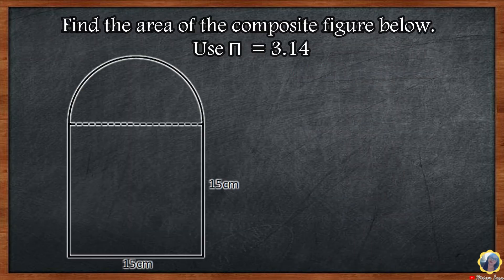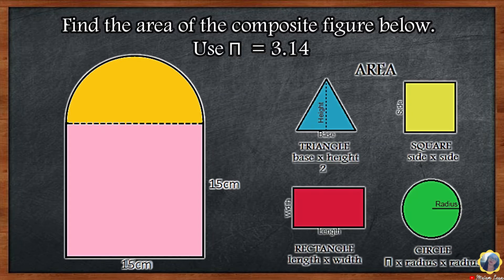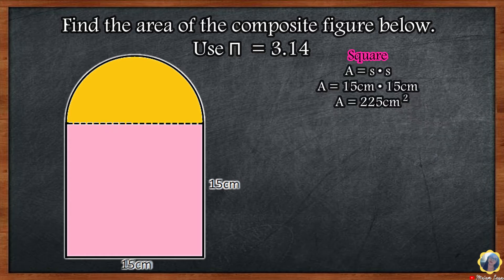Another example: Find the area of the composite figure below. Use pi equals 3.14. If we divide the figure into two, we have a square and a semicircle. Semi means half. Step 1: Find the area of the square. The formula to find the area of a square is side times side, or side squared. 15 centimeters times 15 centimeters — 15 times 15 is equal to 225 square centimeters. The area of the square is 225 square centimeters.